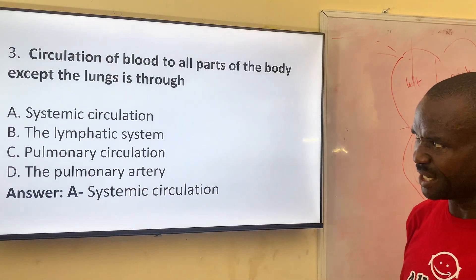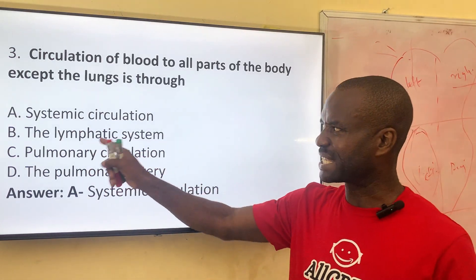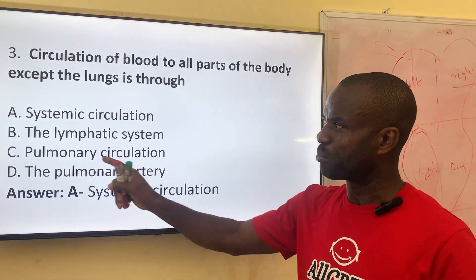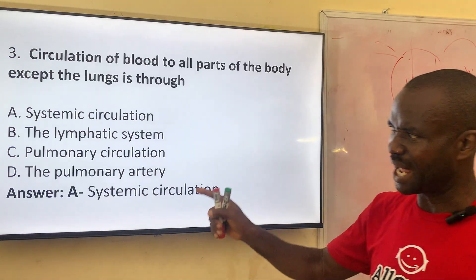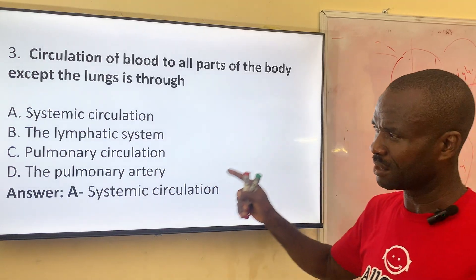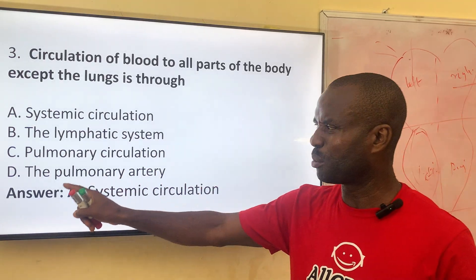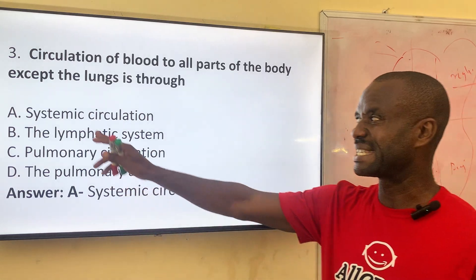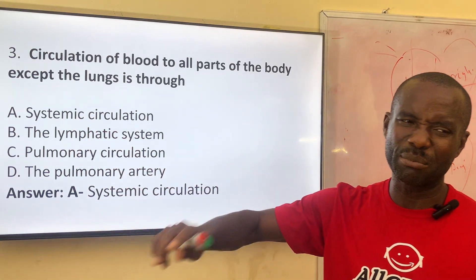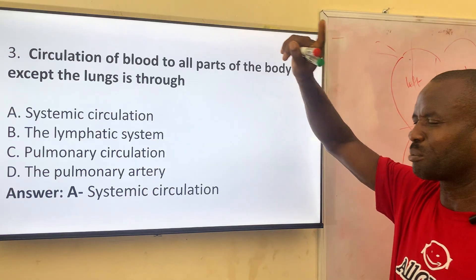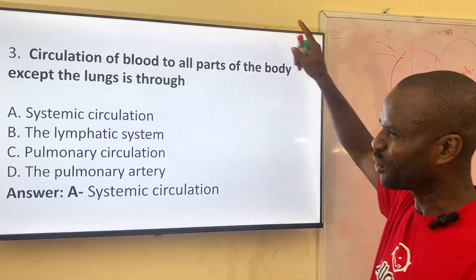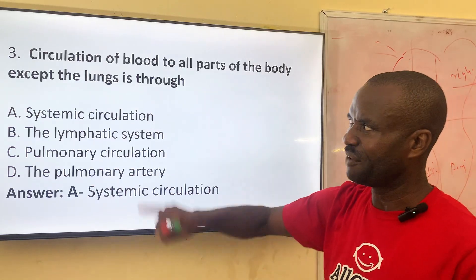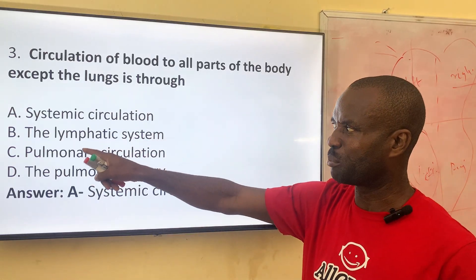Option A: systemic circulation. Option B: lymphatic system — no. Option C: pulmonary circulation — pulmonary circulation has to do with the heart and the lung, through the pulmonary artery. The answer is A, systemic, because it goes from the heart to all parts of the body except the lung. If it passes through the lung, that's what we call pulmonary. So the correct answer is A, systemic circulation.